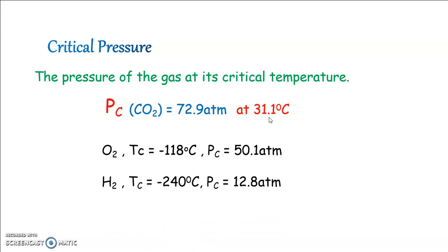The critical temperature of oxygen is minus 118 degrees Celsius and that of hydrogen is minus 240 degrees Celsius. These gases, therefore, cannot be liquefied at ordinary temperature so that they are known as permanent gases. The critical pressures are 50.1 atm and 12.8 atm respectively.